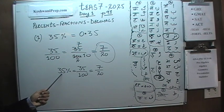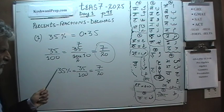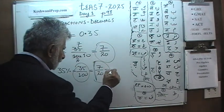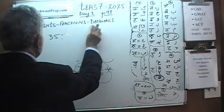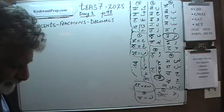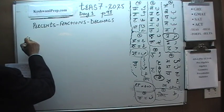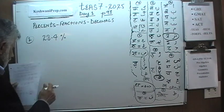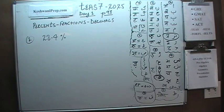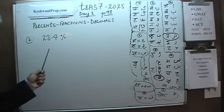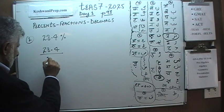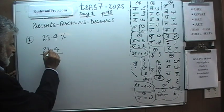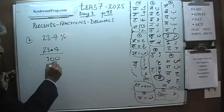In the answer choices you will not see 35/100 — you will see 7/20 because that is the reduced form. You have to reduce it. Let's do the next one: 28.4 percent. Same thing — let's first do the decimal. 28.4 percent means 28.4 out of 100. Since we're dividing by 100, which has two zeros, the decimal is right here.